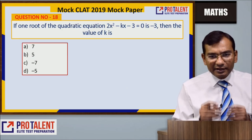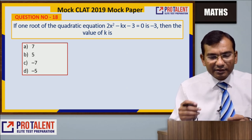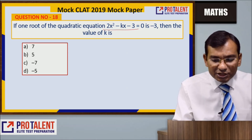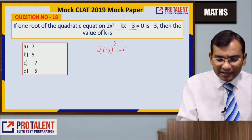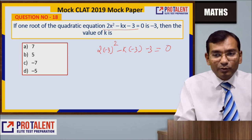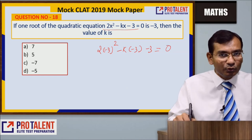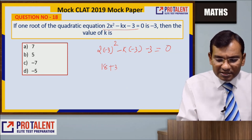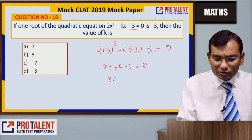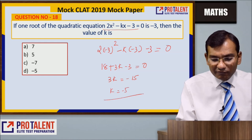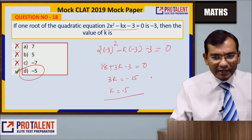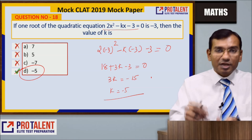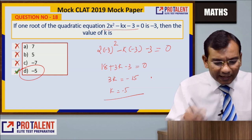Question 17 (quadratic equation): If one root of the quadratic equation is -3, find the value of k. If -3 is a root, substitute x = -3 into the equation: 2(-3)² - k(-3) - 3 = 0. This gives 18 + 3k - 3 = 0, so 3k = -15, k = -5. Answer is -5. When one root is given, substitute it directly into the equation — it will completely satisfy it.